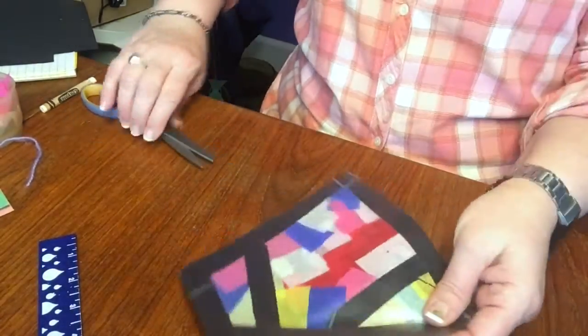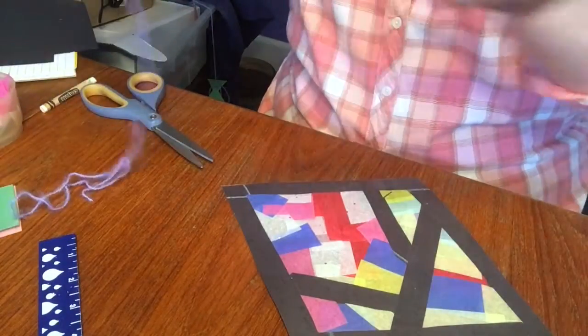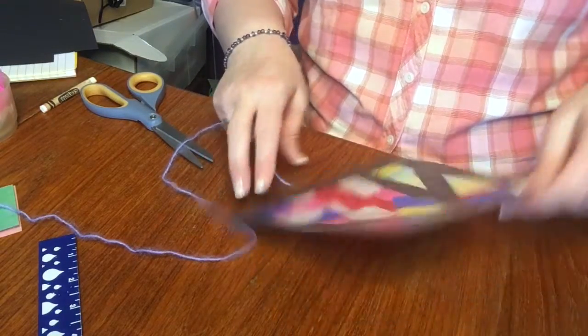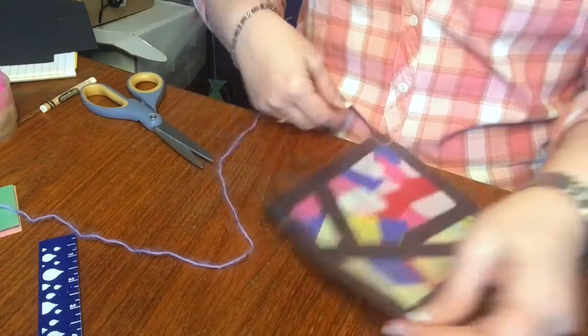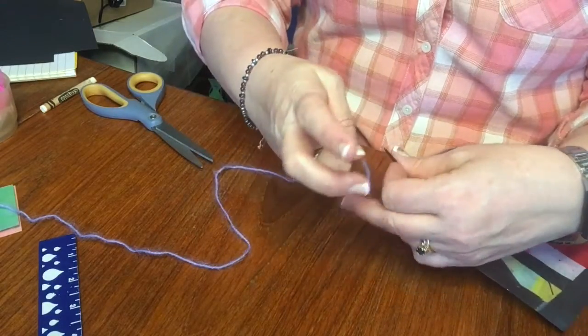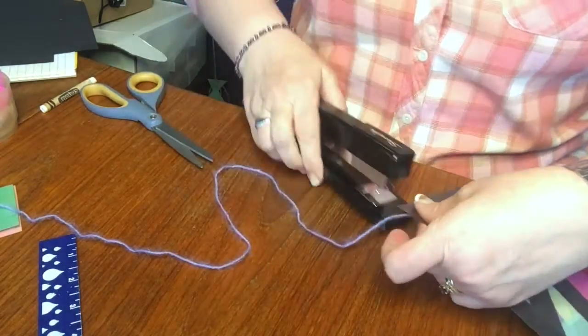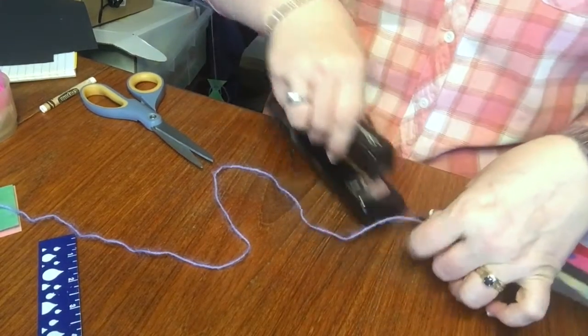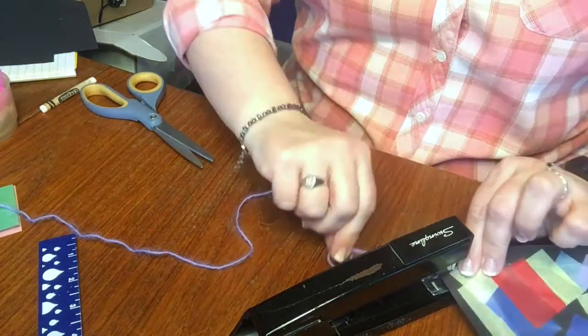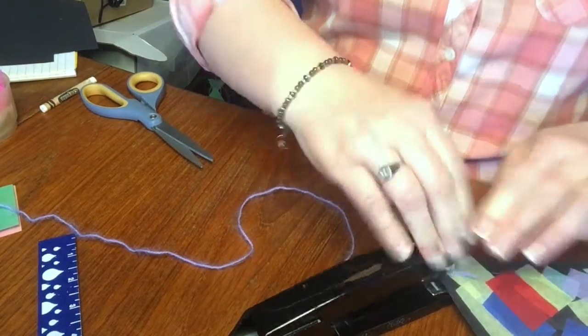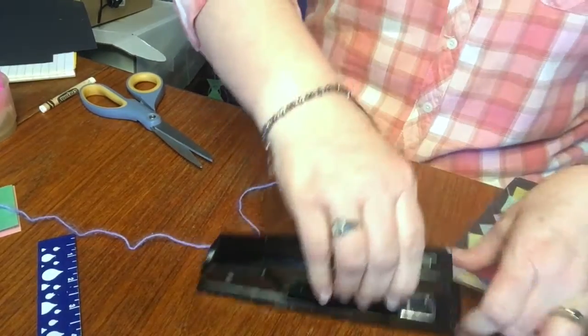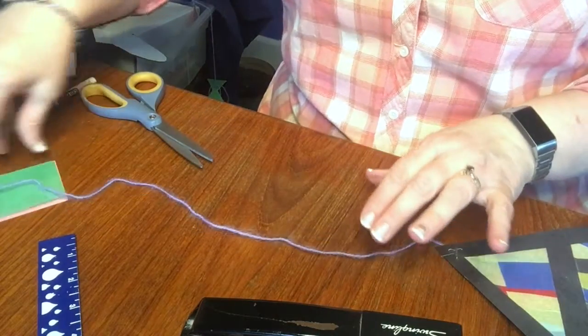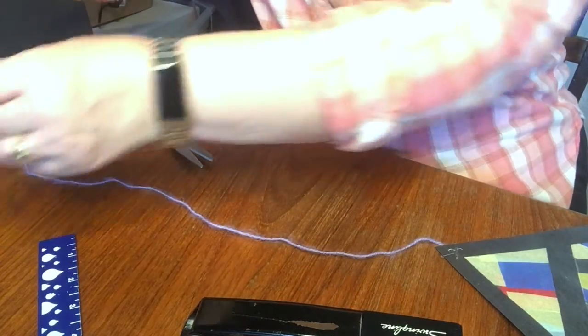Okay, so the last thing we need on our kite is the tail, and that's what your yarn is for. So decide which is the top of your kite and which is the part where the tail is going to attach, and you're just going to use your stapler to staple your yarn onto your kite.